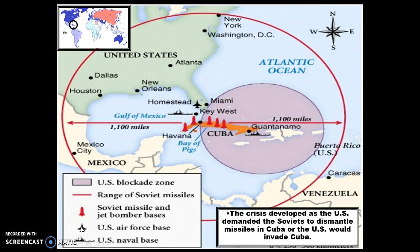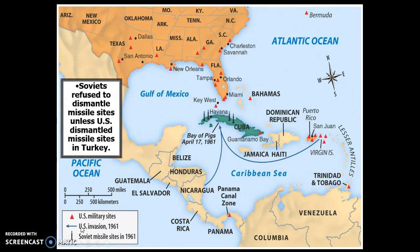The crisis developed as the U.S. demanded the Soviet Union dismantle the missiles, or the U.S. would invade Cuba. This came after the failed Bay of Pigs invasion, so we were threatening not only to blockade the Soviet Union but to invade their ally. We set up an invasion staging from Puerto Rico and Nicaragua and prepared a blockade to fight if necessary.